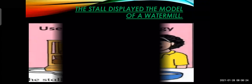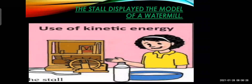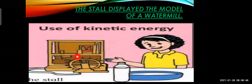The first stall displayed a model of a water mill — use of kinetic energy. Kinetic energy is the energy obtained from motion. A water mill works by diverting water from a river or pond to a water wheel along a channel or pipe. The water's force drives the blades of the wheel or turbine, which turns an axle that drives attached machinery. Due to the force of the water, the wheel starts moving, spinning the rotor of a generator to produce electricity.